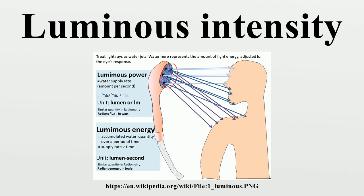In relationship to other measures, luminous intensity is the perceived power per unit solid angle. If a lamp has a one-lumen bulb and the optics of the lamp are set up to focus the light evenly into a one-steradian beam, then the beam would have a luminous intensity of one candela. If the optics were changed to concentrate the beam into one-half steradian, then the source would have a luminous intensity of two candela. The resulting beam is narrower and brighter, though its luminous flux remains unchanged.